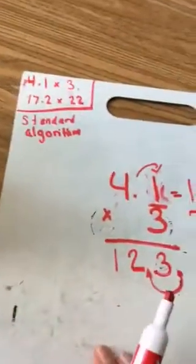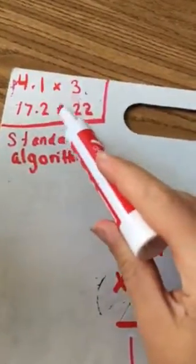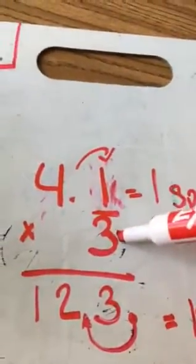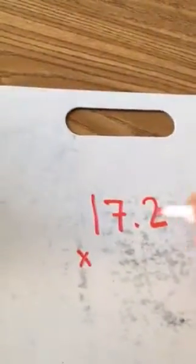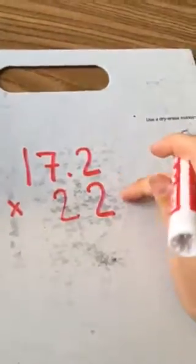Okay, on the back of this I'm going to be doing 17.2 times 22. So that was a one-digit multiplication, now we'll do two digits. So 17.2 times 22. Make sure it's lined up like that. We don't want to have our 2 over here in this place value. We want to make sure everything's lined up nice.